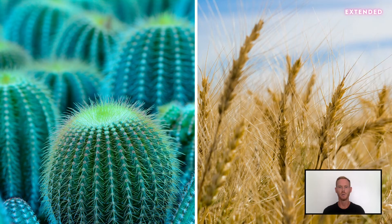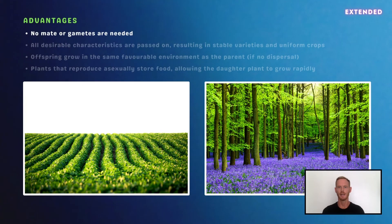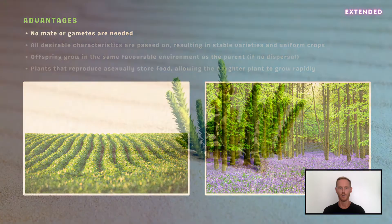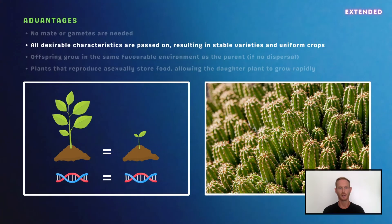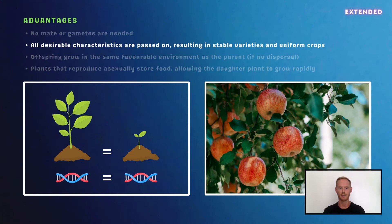That's everything for core, but for extended you also need to discuss the advantages and disadvantages of asexual reproduction. Asexual reproduction in plants is typically a quick and energy-efficient process, as no mate is needed or gametes produced. This benefits crop production, increasing yield, and allows species to establish large populations in the wild. It also ensures that organisms can reproduce and survive in habitats where mates or pollinators are scarce. All the characteristics of the parent are passed on to the next generation, ensuring that beneficial traits are retained so the next generation is well-suited to its environment, and that crops all have the same desirable features.